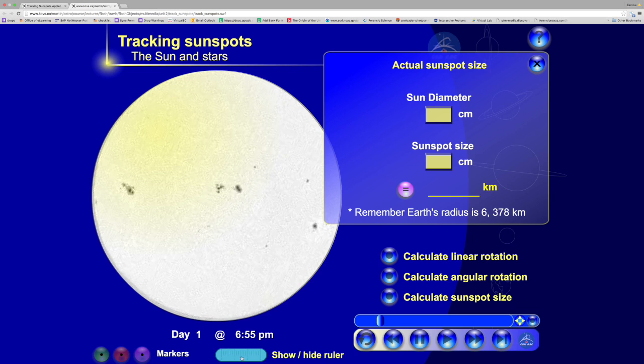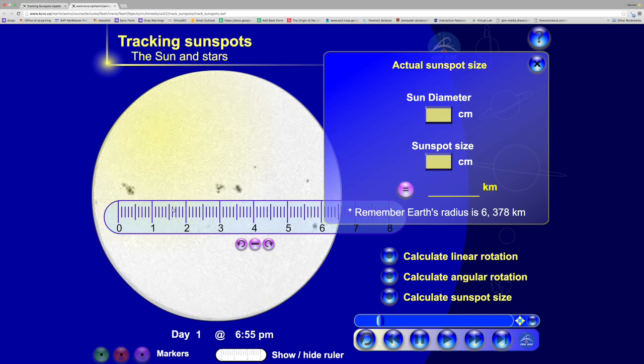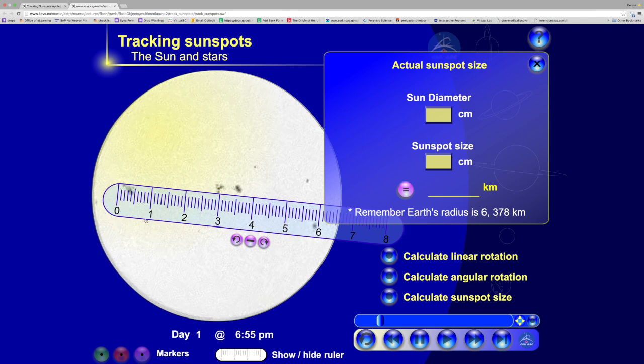We're just going to grab a sunspot, use our ruler - you can turn it sideways by using this little angle - and measure the size of it. We're going to do the best that we can.